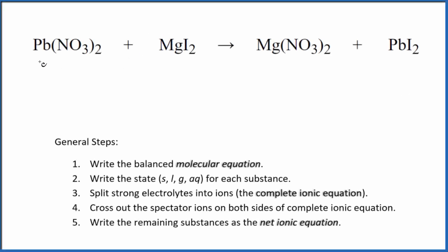Let's write the balanced net ionic equation for Pb(NO3)2 plus MgI2. This is lead 2 nitrate and we have magnesium iodide. So the first thing we need to do for a net ionic equation, we need to balance the molecular equation. This is the molecular equation.